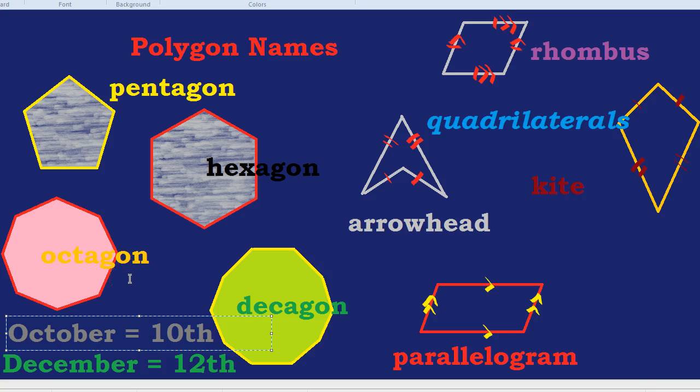Same with November, which is like a nonagon, which has nine sides. But it's the eleventh month. Or September. A septagon has seven sides. But September is the ninth month. Have you noticed they're all up by two? They're all two more than what you might expect.